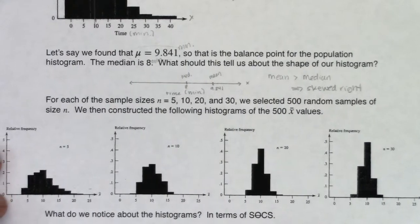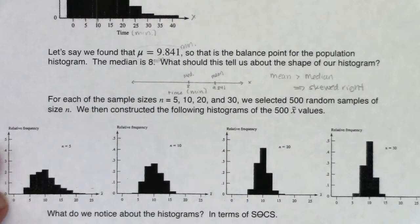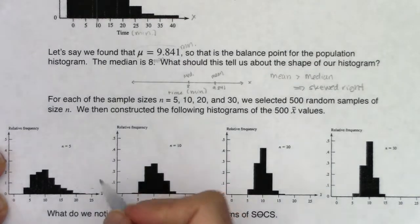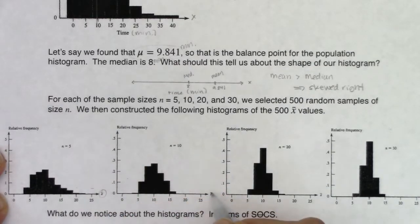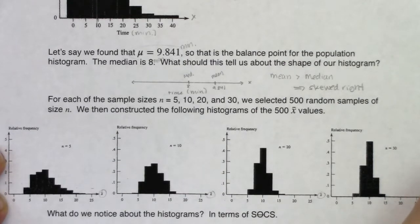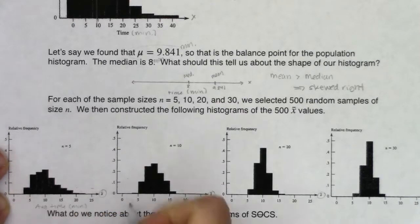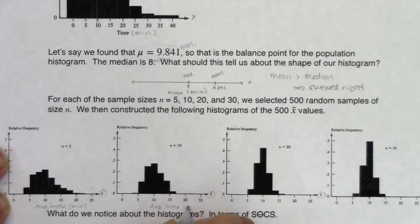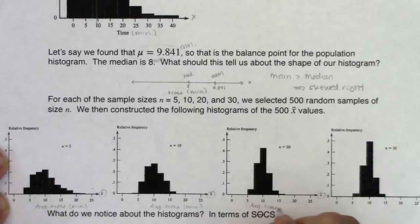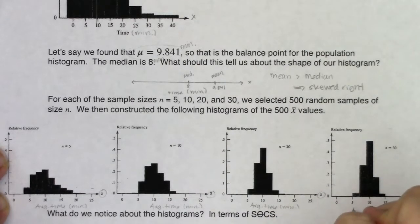We have four sampling distributions down here. The x-axis on all of them has x-bars now. What's on the x-axis is average time in minutes. So these are all graphing averages in minutes.